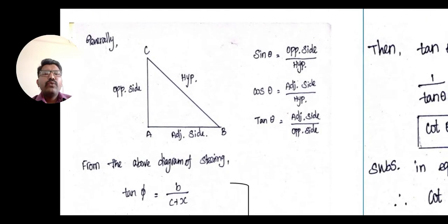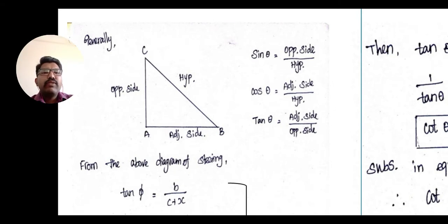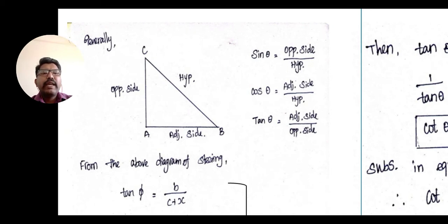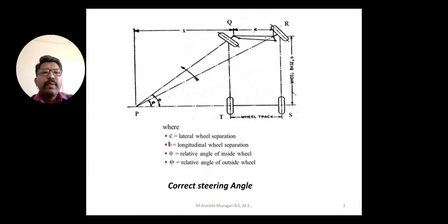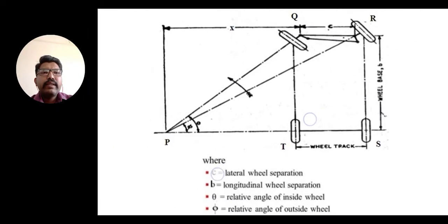According to trigonometry, we can take a right angle triangle with points A, B, C where side A-B is the adjacent side, B-C is the hypotenuse, and A-C is the opposite side. We know that sin theta equals opposite side divided by hypotenuse, cos theta equals adjacent side divided by hypotenuse, and tan theta equals opposite divided by adjacent side. From this, we are going to refer to the previous correct steering angle diagram.